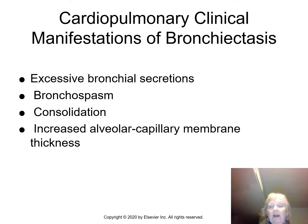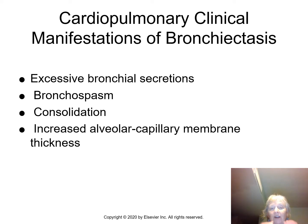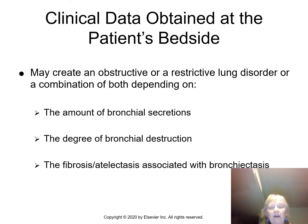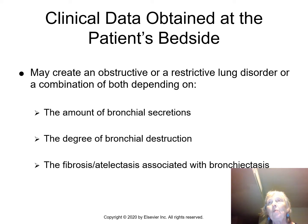Cardiopulmonary clinical manifestations include excessive bronchial secretions, bronchospasm, and consolidation, with an increased alveolar-capillary membrane thickness impairing gas exchange. Clinically, we assess whether the patient is primarily obstructive or restrictive, or both — depending on the amount of secretions, the degree of destruction, and the extent of fibrosis and atelectasis present.